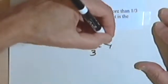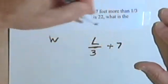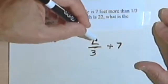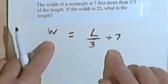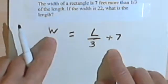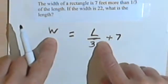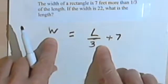So if it's seven feet more, it means I would have to add 7 to one-third of the length in order to get the width. So now I've got my equation. I've got width equals L over 3, one-third of the length, plus seven.